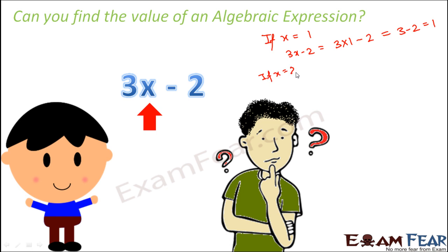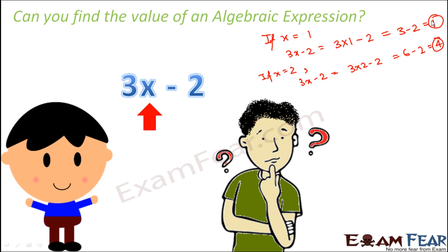If the value of x is equal to 2, then this expression will be equal to 3 into 2 minus 2, that is 6 minus 2, which is equal to 4. So the value of the expression changes with the changing values of the variable. So if we know the value of the variable, we can definitely find the value of the expression.